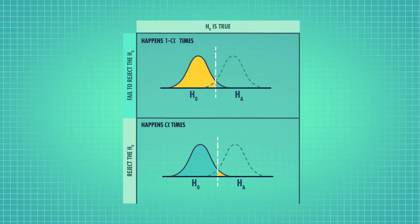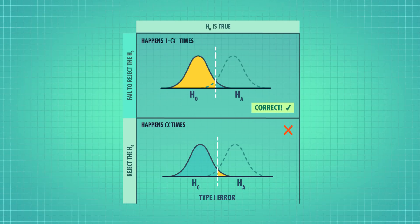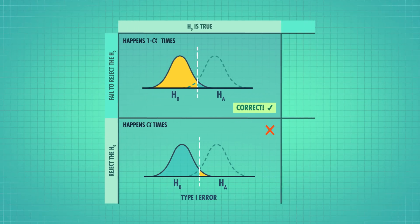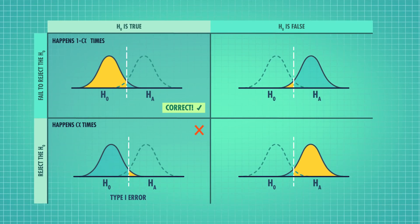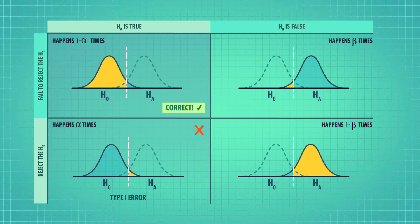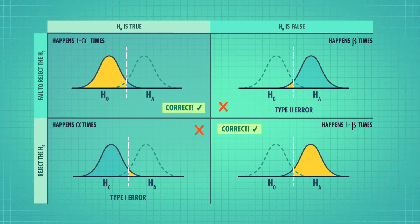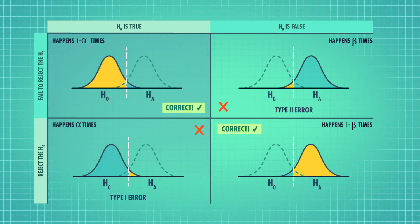Sometimes we do make the right decision, and there are two ways to be right. Either the null hypothesis is true and we fail to reject it, or the null hypothesis is false and we do reject it. If the null is true, you'll correctly fail to reject it 1 minus alpha of the time — when alpha is 0.05, that means we'll correctly fail to reject 95% of the time. If the null is false and the alternative is true, we'll correctly reject the null 1 minus beta of the time. If beta — the proportion of times we will fail to reject the null even though it's false — is 10%, then we'll correctly reject the null 90% of the time. This proportion, 1 minus beta, is called our statistical power.